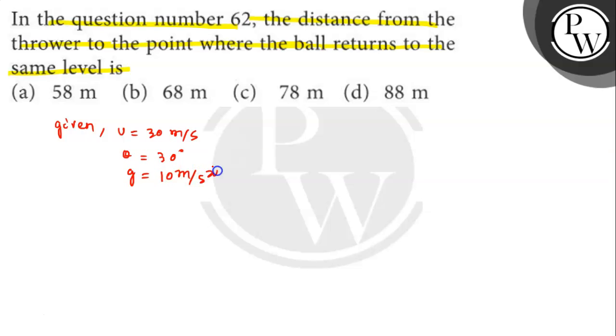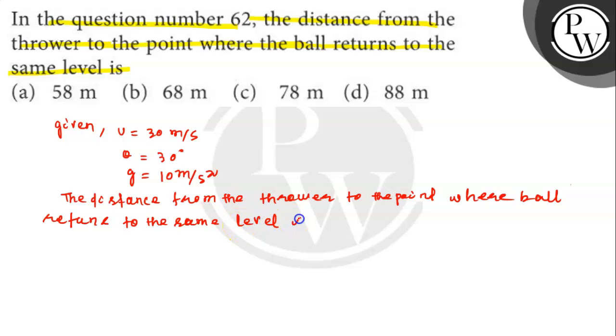This is the distance from the thrower to the point where ball returns to the same level. This is the range. The range is equal to u square sin 2 theta divided by g. So u value is 30.